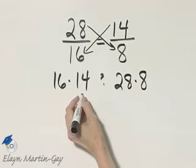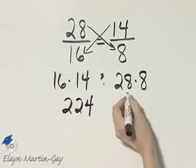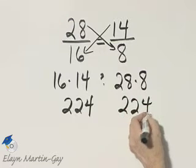Well, if you multiply 16 times 14, that is 224. If you multiply 28 times 8, that happens to also be 224.